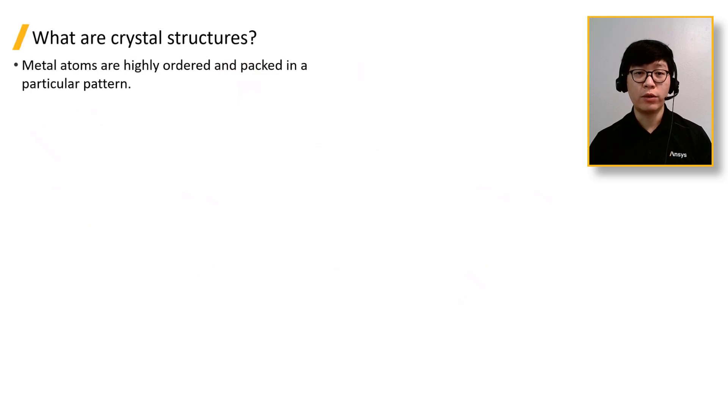Next, we can introduce the concept of crystal structures. Within each grain, the metal atoms are highly ordered and packed in a particular pattern. This packing pattern is known as the crystal structure, and is dependent on the type of the metal atom.